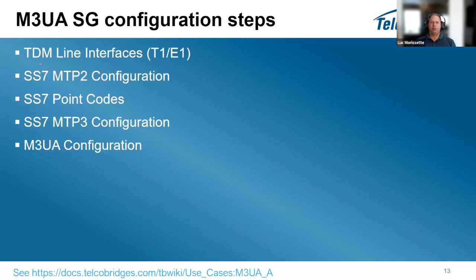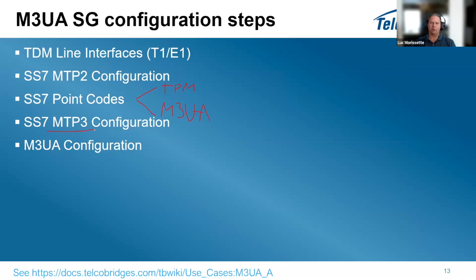Configuration steps require: TDM T1/E1 setup to connect to the traditional network; MTP2 configuration covering timeslots, signaling links, and A-links; point code definition (at least one DPC towards TDM and one OPC towards M3UA); MTP3 configuration with routes toward TDM and toward M3UA; and finally the M3UA configuration itself.